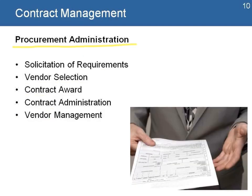In procurement administration, this is where we manage the process for solicitation of requirements, vendor selection, how we select the contract award, how we select a vendor, how we manage and administer the contracts with the different vendors, and the process of vendor management — including the communications and reporting we do.